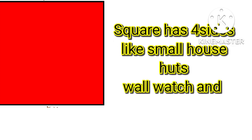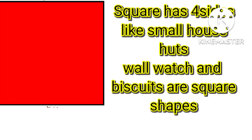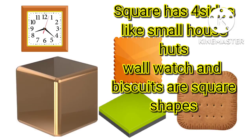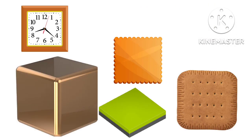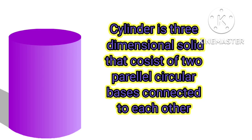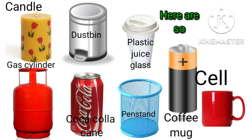Square has 4 sides, like a small house, hut, wall watch, biscuit, box and other things we can see.